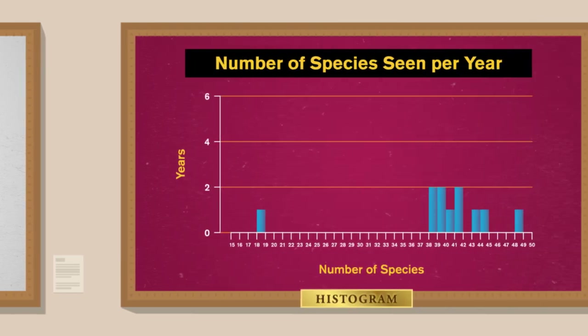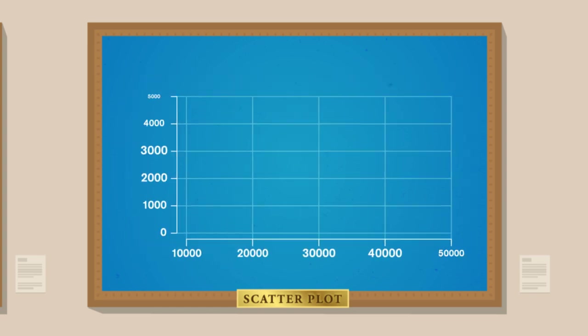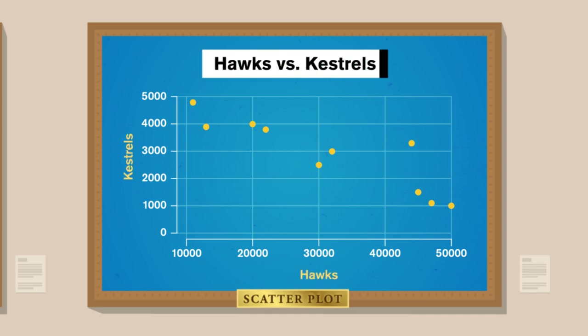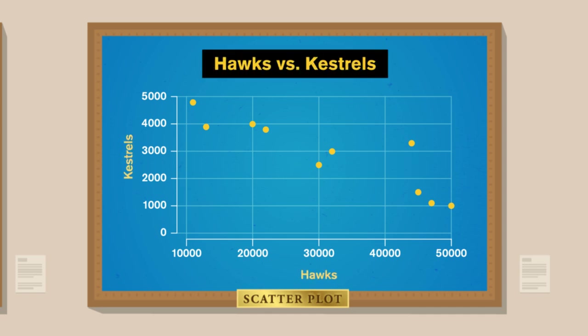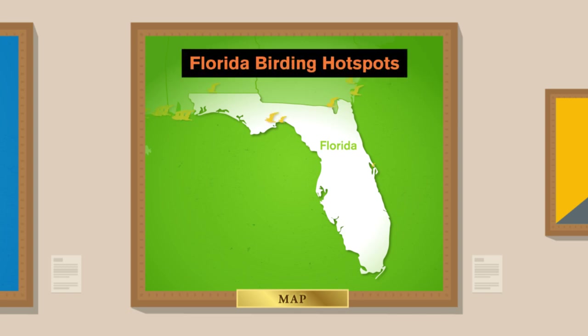We're also interested in how variables relate to each other. A scatter plot tells the story about a relationship, or correlation, between two variables by putting one variable on each axis and plotting corresponding pairs of values. For example, if two bird species are competitors, they might not migrate together, and we'd expect a negative correlation. Maps tell stories about information across a space — like plotting all locations where a bird was reported to see where the birds, or birders, hang out.